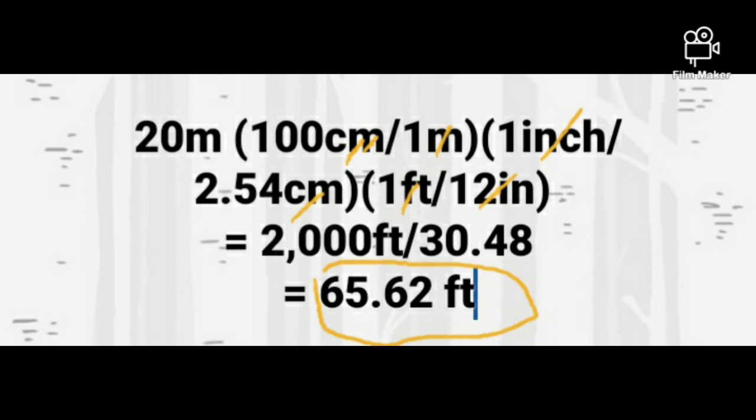20 meters times 100 centimeters over 1 meter times 1 inch over 2.54 centimeters times 1 foot over 12 inches. Multiply both numerator and denominator: 20 times 100 times 1 equals 2,000 feet over 1 times 2.54 times 12 equals 30.48.